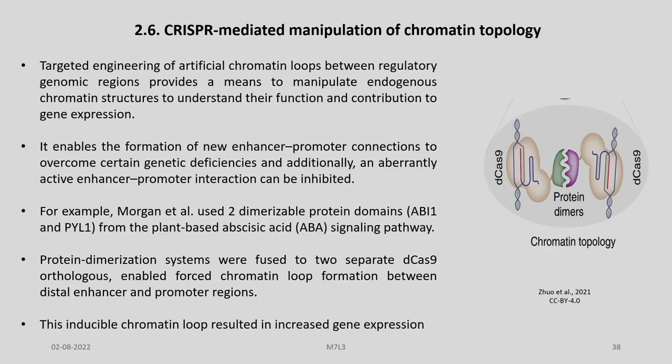Another application is CRISPR-mediated manipulation of chromatin topology. You can see here a D-Cas9/gRNA bound to one protein and another D-Cas9/gRNA bound to another protein, and these two proteins can dimerize. Targeted engineering of artificial chromatin loops between regulatory genomic regions provides a means to manipulate endogenous chromatin structures to understand their function and contributions to gene expression.